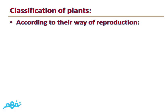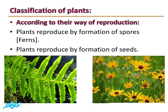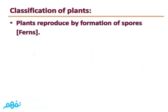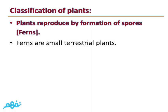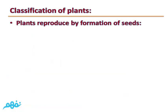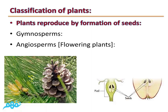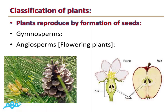The second classification is according to the way of reproduction. Plants are divided into those reproduced by the formation of spores, such as ferns, and those reproduced by the formation of seeds. Ferns are small terrestrial plants, such as Pugir and Adiantum. They reproduce by the formation of spores. Other plants reproduced by seeds are divided into Gymnosperms and Angiosperms, also called flowering plants.